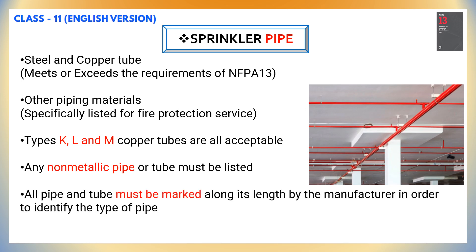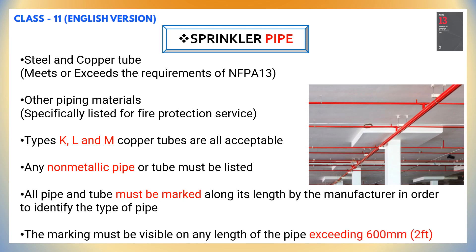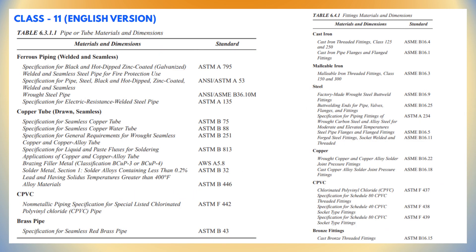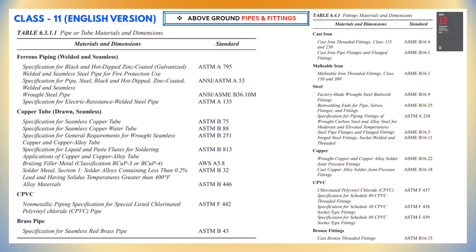All pipes, including specially listed pipes allowed by NFPA 13, shall be marked along their length by the manufacturer in such a way as to properly identify the type of pipe. The marking must be visible on every piece of pipe over 2 feet or exceeding 600 mm. Pipe identification shall include the manufacturer's name, model, designation, or schedule of the pipe.